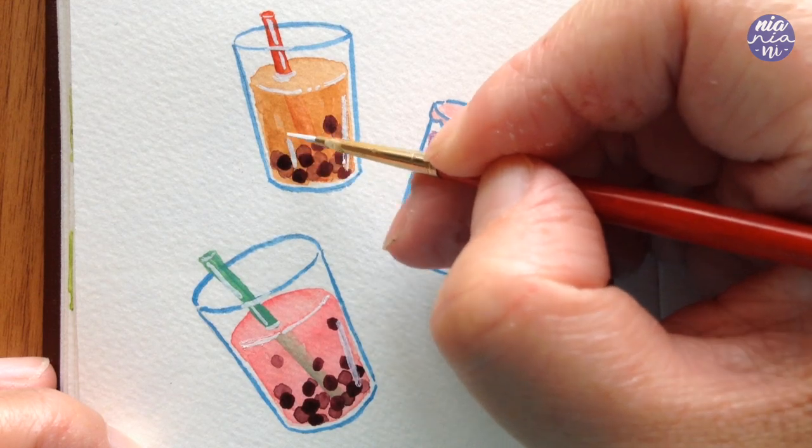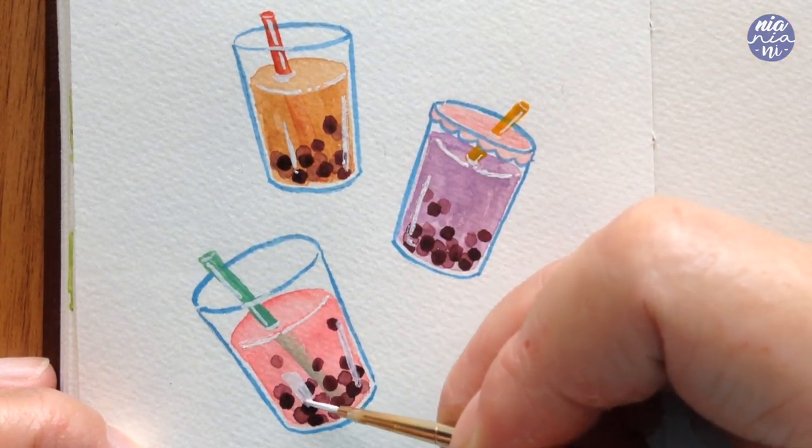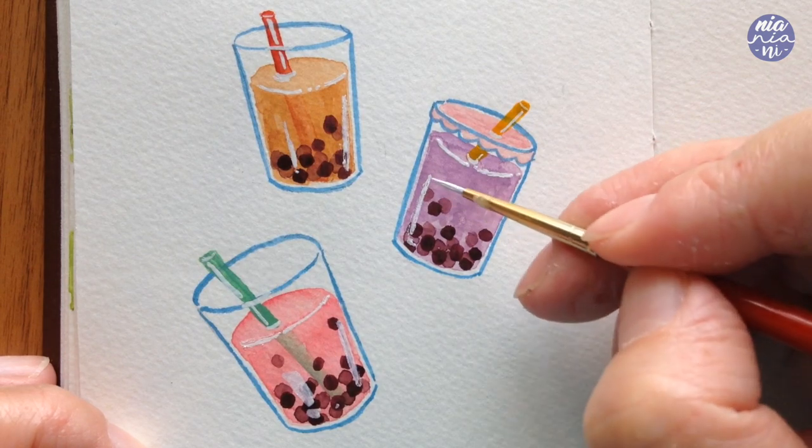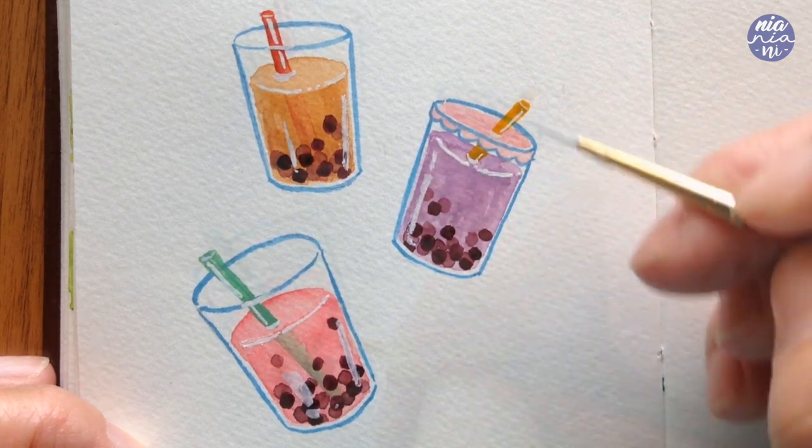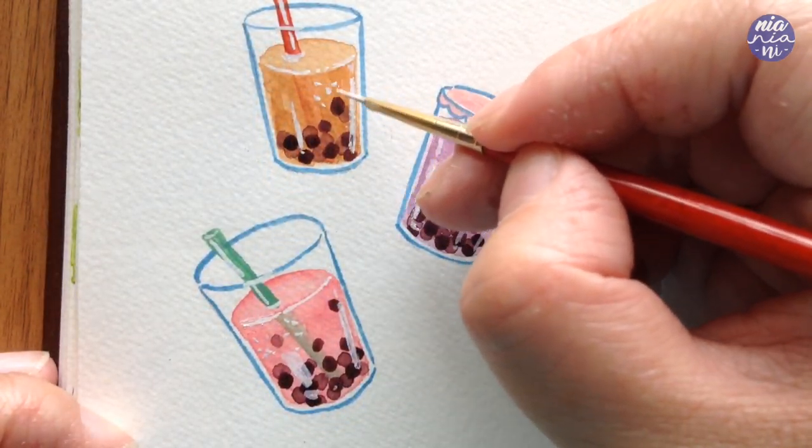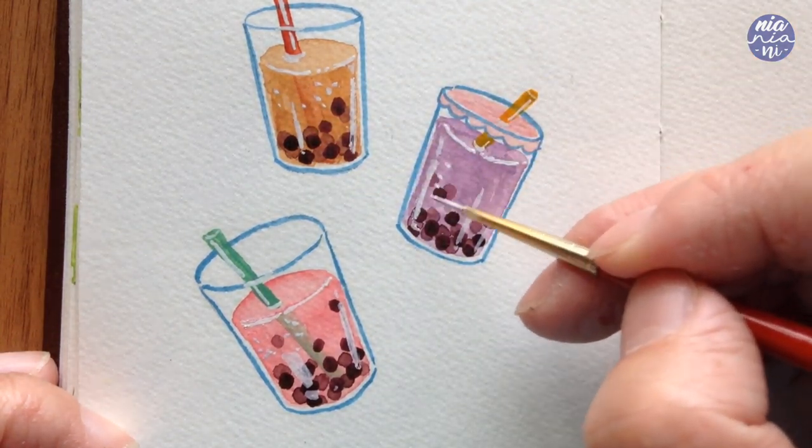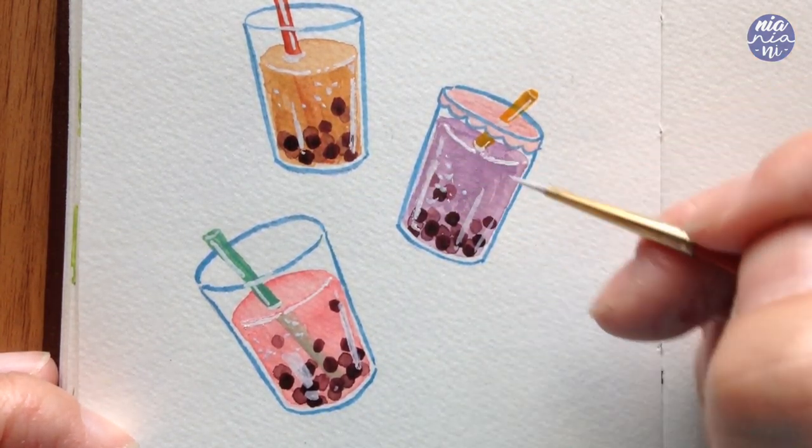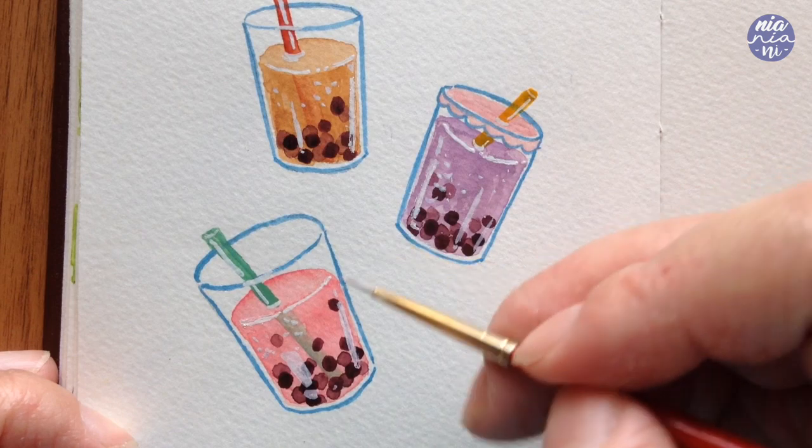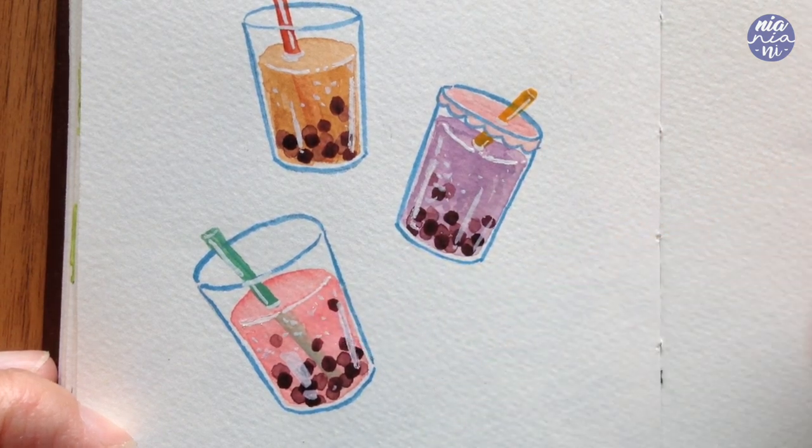Or mix it up with some dots too, so it doesn't look too flat. And I like to vary the height of the highlights so it doesn't all look uniform. And I'm also going to add dots for a little bit of added texture to the drink.